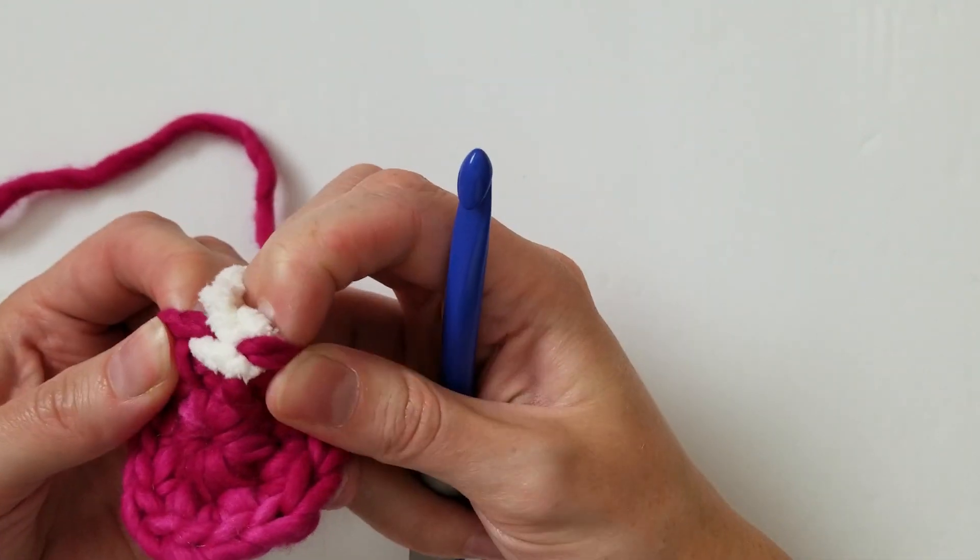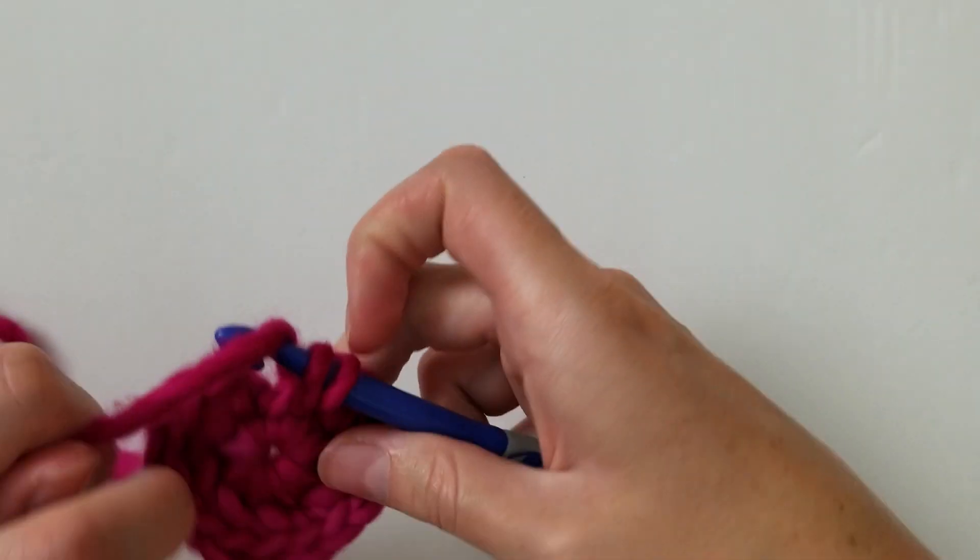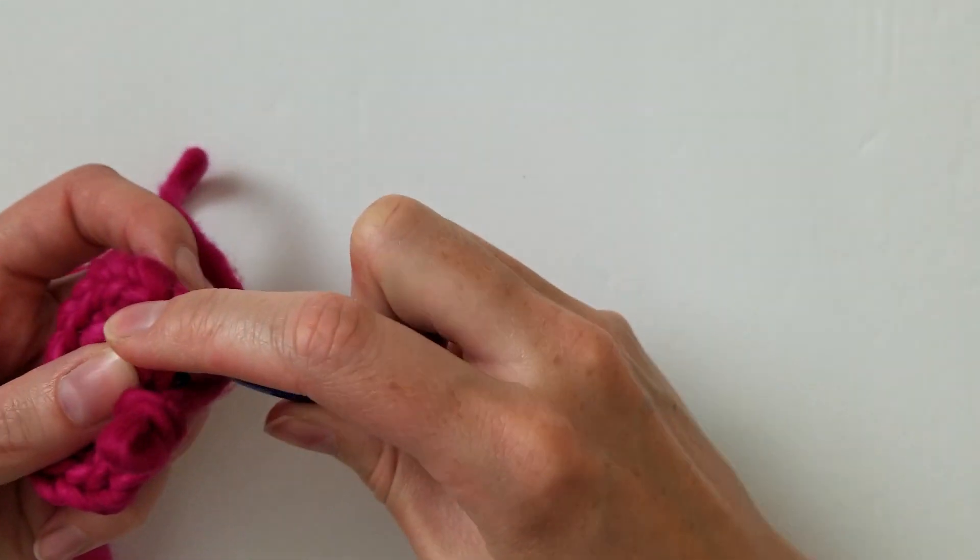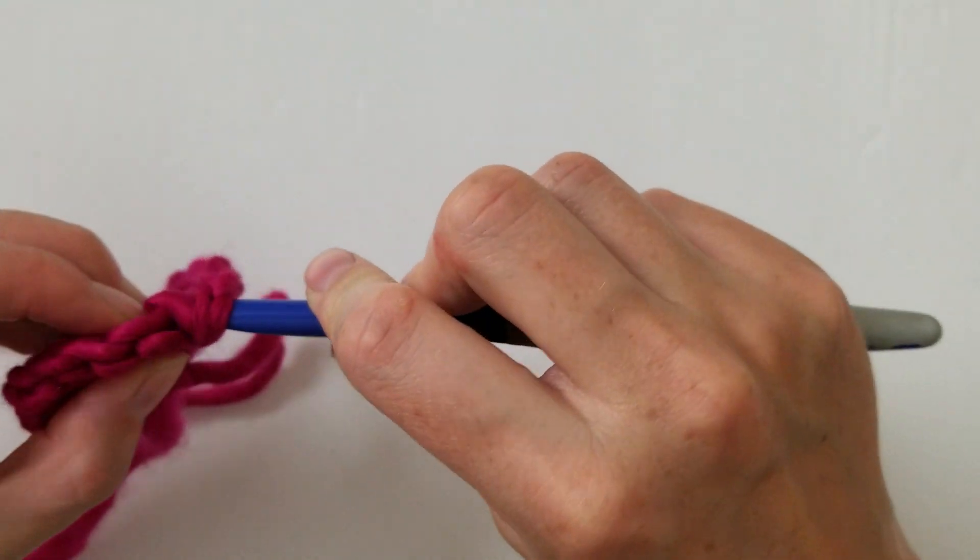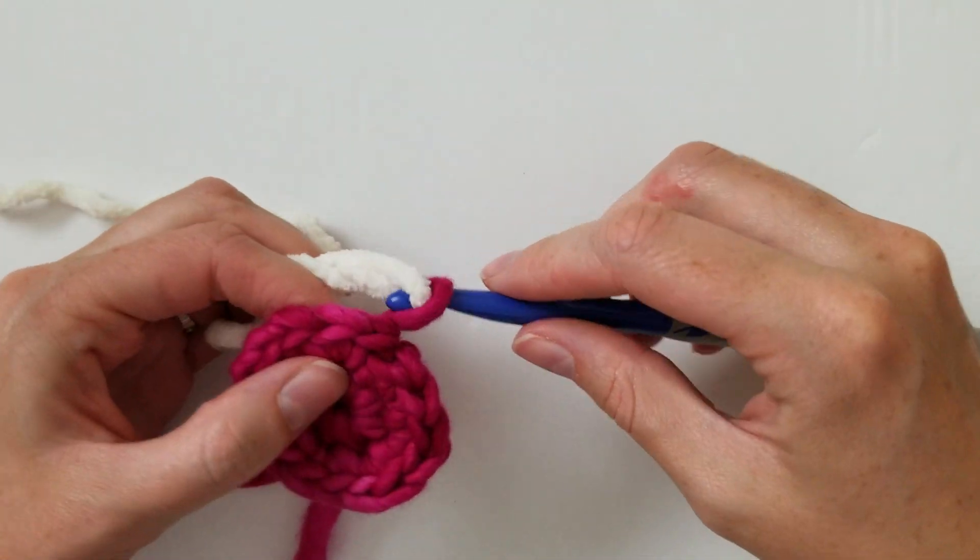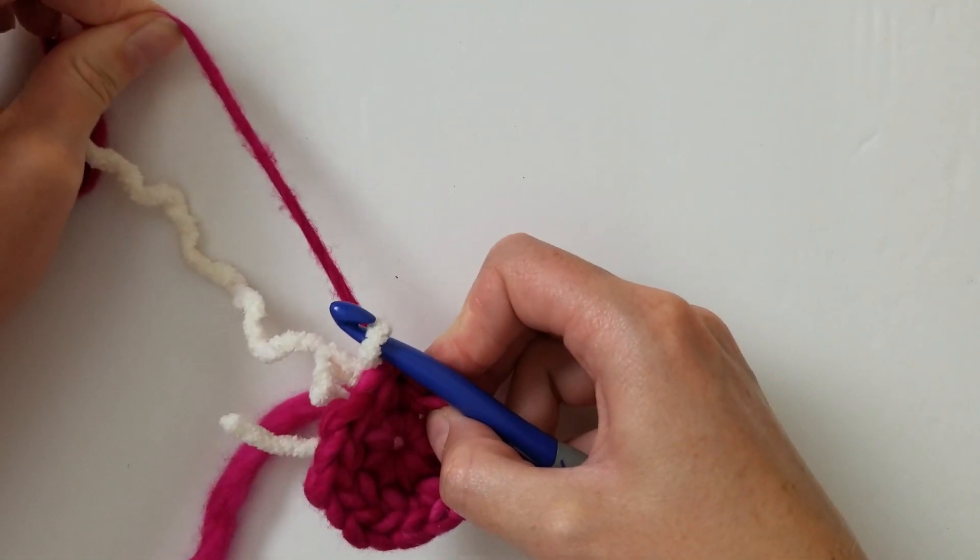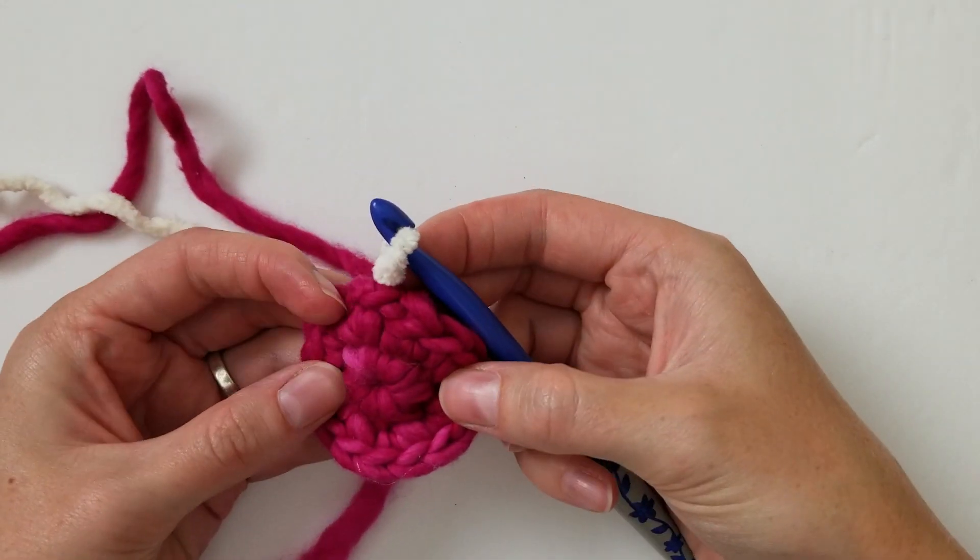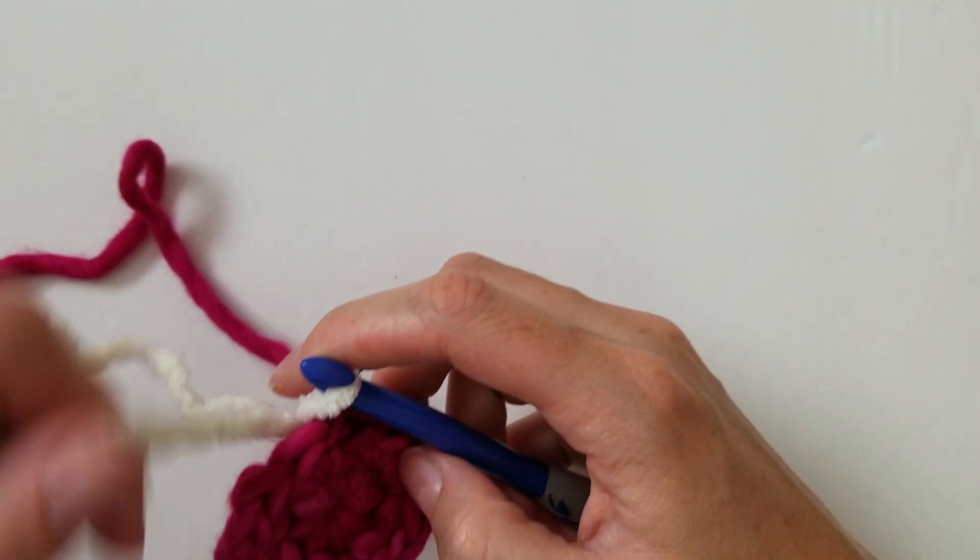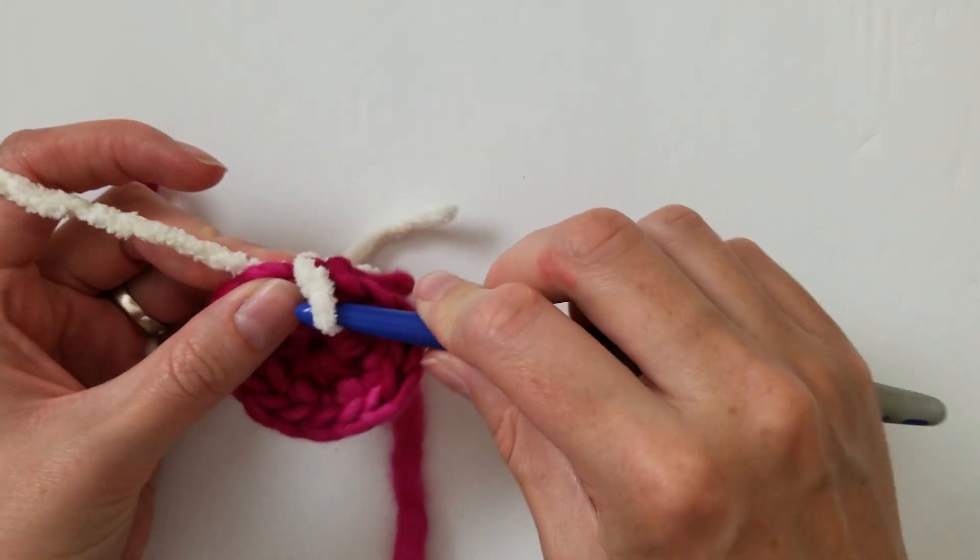Another way you can do it would be to do like we had before: do the invisible slip stitch with the same color, pull that through there, and then take a loop of your next color and pull it through like that. And then just take this end of the color that you're currently using and pull it really tight, and that fastens it off completely. And you really don't have anything that shows that you switched colors right here. It's a very clean transition.